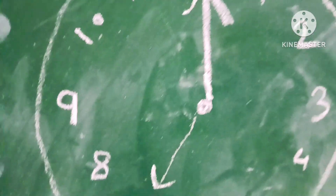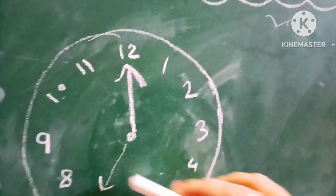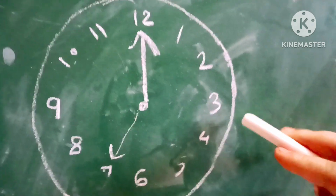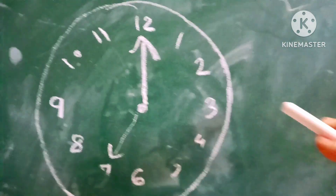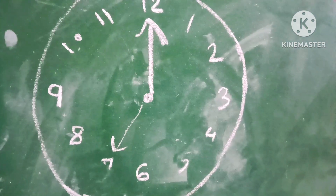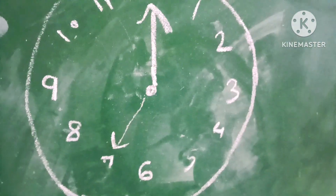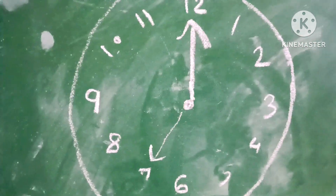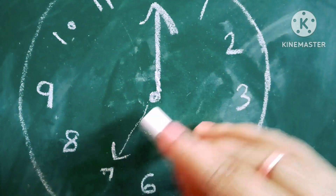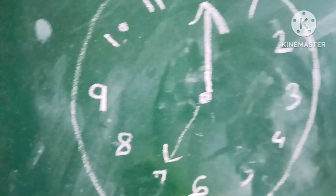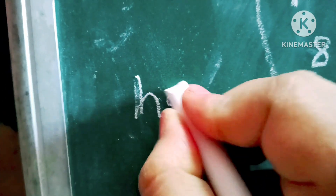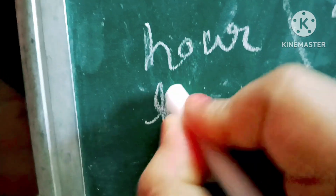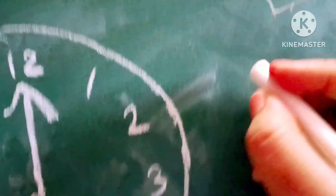So let's start with time. Children, this is a clock. As you can see, a clock has two hands — minute hand and hour hand. Can you tell me which one is the hour hand and which one is the minute hand? The short hand is called the hour hand, and the long hand is called the minute hand.